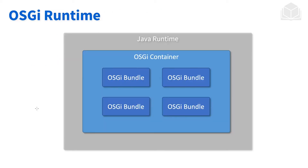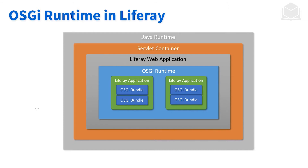Here we see a diagram of the OSGi runtime. The Java runtime runs on the outside. Within that Java runtime, we have the OSGi container that runs all of our OSGi bundles. If we zoom out even further, we have the OSGi runtime or OSGi container which has our Liferay applications. Our Liferay applications are built using OSGi bundles. This whole OSGi runtime lives within Liferay, the web application runs on a server-like container like Tomcat, and then Tomcat is run on the Java runtime.